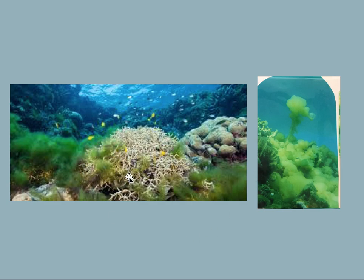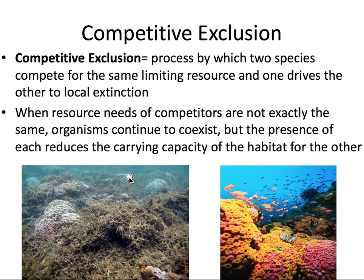This algae had taken over. And while this is sad, it actually demonstrates a concept we're going to look at next — competitive exclusion. Two species, when they compete for the same limiting resource, one may drive the other to local extinction, forcing it out. What's happening between the coral and the algae is that they're both competing for the same resource — they want to fill the same exact niche, they both want to live on the ocean floor. In this case, the algae wins: it grows more quickly and is able to suffocate the coral and drive it to local extinction. This is known as competitive exclusion.